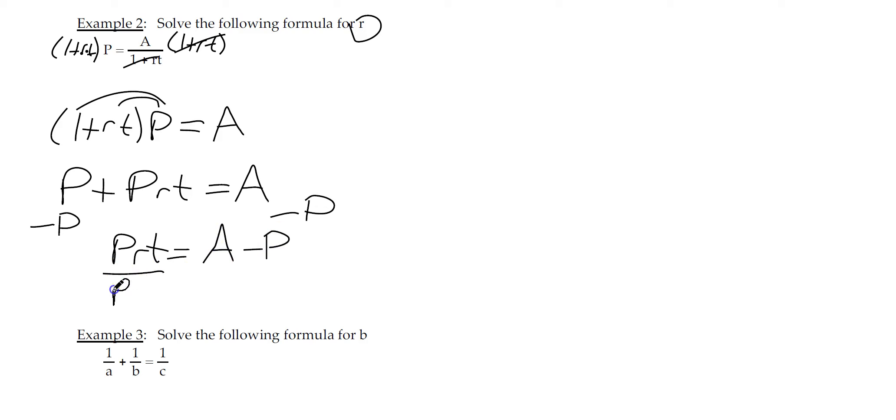Let's divide by the stuff we don't want out of that term. Reduce, reduce, reduce, reduce. And we have r equals A minus P, all capitals, over big capital P and lowercase t.